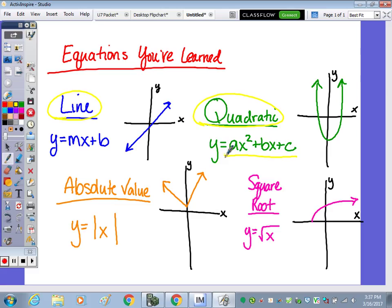And then from Algebra 1, you've learned more than just these two, but back in Algebra 1 you also learned about an absolute value function, which this graph looks like a v, and then the square root function, which this graph looks like half of that u-shaped curve that you see in the quadratic. So absolute value is y equals the absolute value of x, and y equals the square root of x.